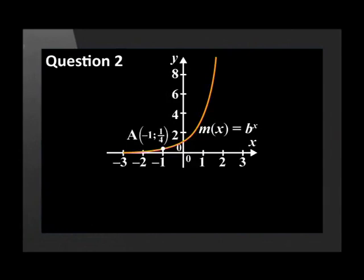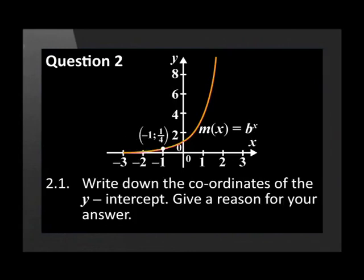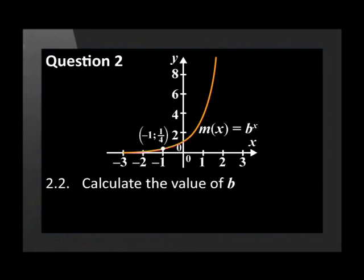A, negative 1, 1 quarter is a point on the graph of m. Write down the coordinates of the y-intercept. Give a reason for your answer. Calculate the value of b.